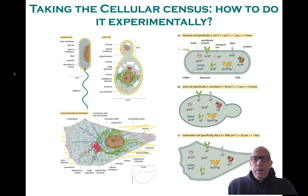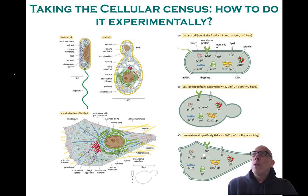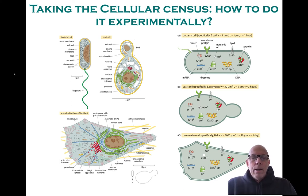Why? Well, for example, if I acknowledge that I need to take on board 10 to the 10th carbon atoms during the thousand or so seconds of a fast cell cycle, then that means that something on the order of between 10 to the 6th and 10 to the 7th carbons need to be taken on board every second. And that in turn means that around a million sugars need to be taken on board every second. So we're going to have to ask ourselves the question, how many sugar transporters are there?